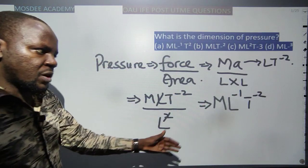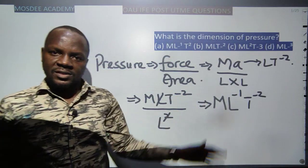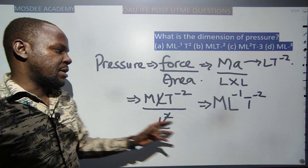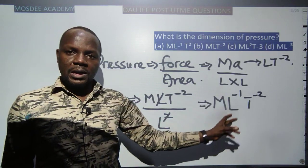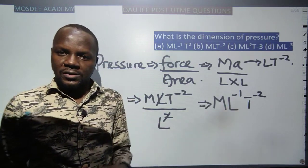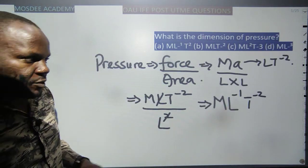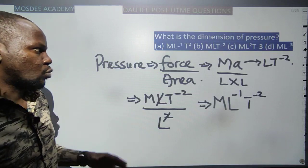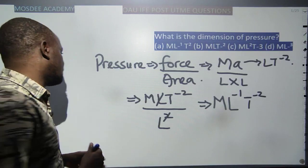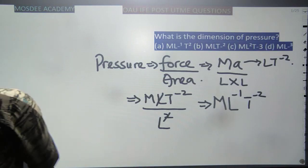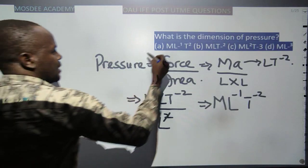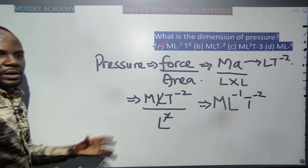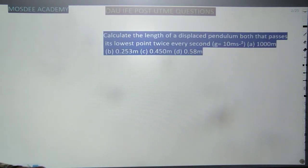For some of you who have memorized it: pressure has the dimension ML⁻¹T⁻². That is the correct answer to our first question, and by the options it tallies with choice A.